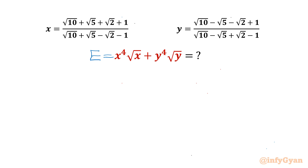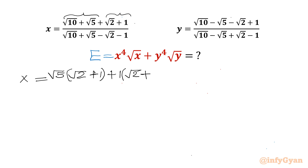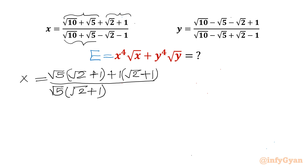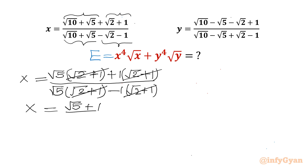I will begin with simplifying x and y. From the first two terms of the numerator, √5 is common, so I write √5 times (√2 + 1) in the bracket. From the last two terms, (√2 + 1) is common with a factor of -1. Taking (√2 + 1) common from numerator and denominator, x simplifies to (√5 + 1) / (√5 - 1).